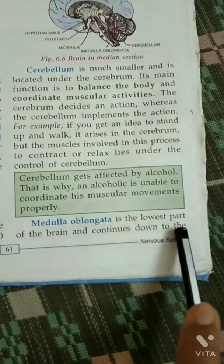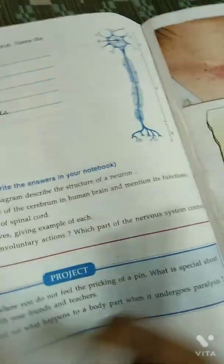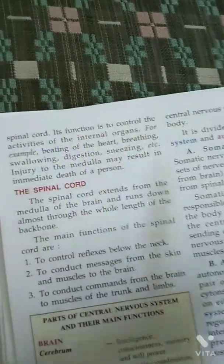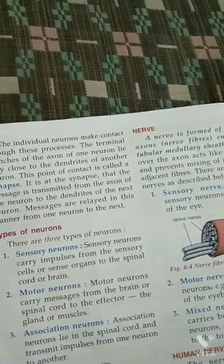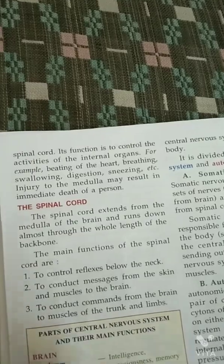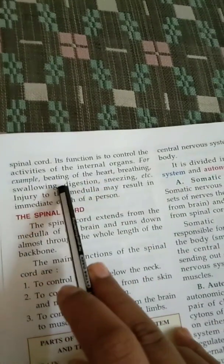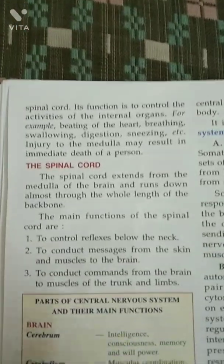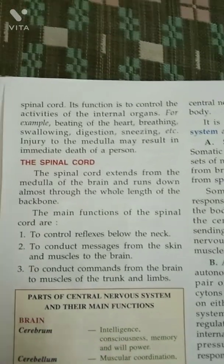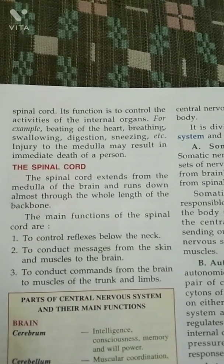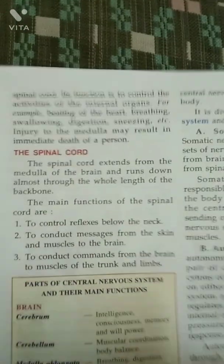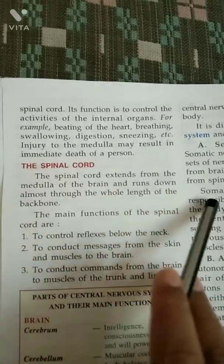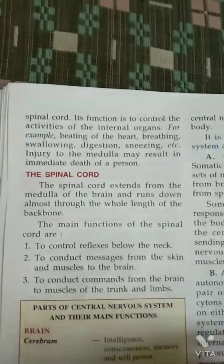Medulla oblongata is the lowest part of the brain and continues down to the spinal cord. Its function is to control the activities of internal organs — involuntary activities like beating of heart, breathing, swallowing, digestion, sneezing, etc. Injury to the medulla may result in immediate death of a person.